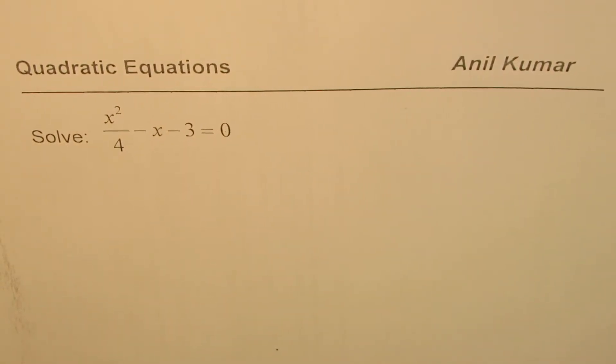I'm Anil Kumar and in this series of quadratic equations I've taken a few examples where fractions are involved. The question here is solve x squared divided by 4 minus x minus 3 equal to 0.